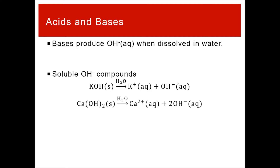Bases are the counterpart to acids. Bases produce OH- when dissolved in water. For our purposes, the main type of base is soluble hydroxide compounds — the best way to produce hydroxide in solution is to take an ionic compound containing hydroxide and dissolve it in water. All alkali metal hydroxides — lithium through cesium — can dissolve to make hydroxide in solution. Calcium hydroxide and barium hydroxide are also soluble. Use the solubility rules to determine if a hydroxide-containing compound is a base.